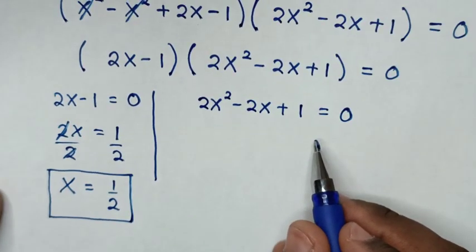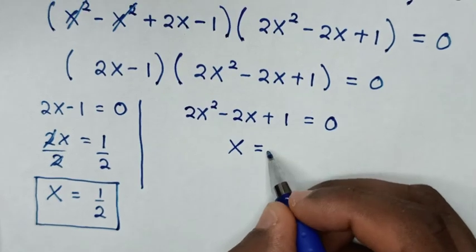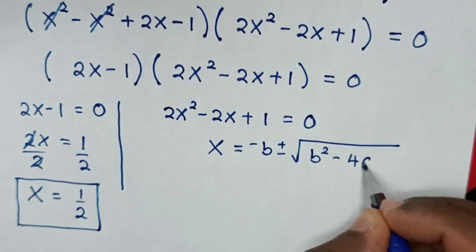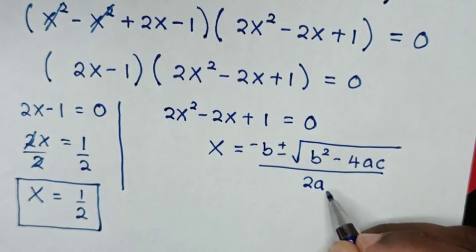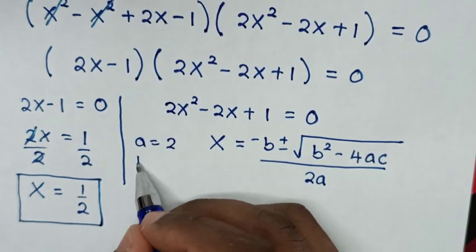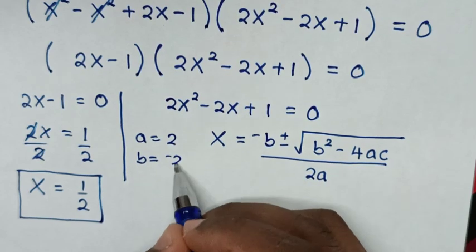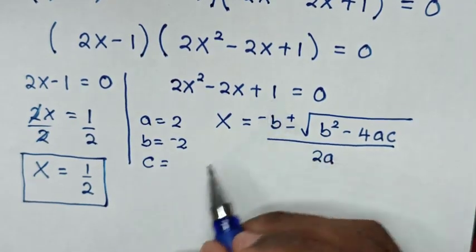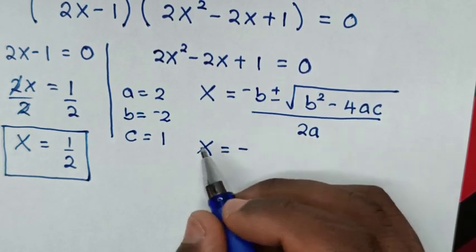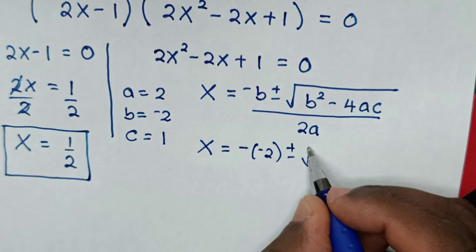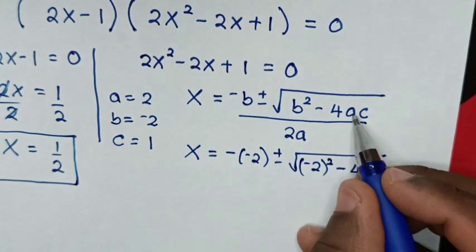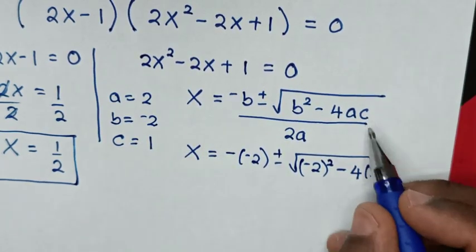To solve the quadratic equation we use the quadratic formula: x equals negative b plus or minus square root of (b squared minus 4ac), all over 2a. From 2x squared minus 2x plus 1 equals 0, we have a equals 2, b equals negative 2, and c equals 1. Substituting: x equals 2 plus or minus square root of (negative 2) squared minus 4 times 2 times 1, all over 2 times 2.